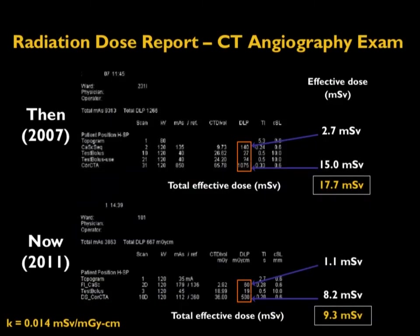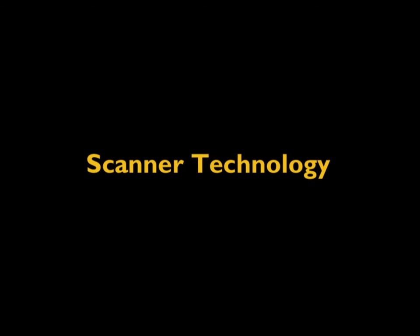This dose reduction is also demonstrated in patient dose reports from 2007 and 2011. In 2007, when retrospective ECG gating was commonly performed, radiation dose could be as high as 15 mSv. By 2011, with prospective triggering methodology, the dose came down to roughly one-half to one-third of that level. A number of advances have enhanced the ability to perform cardiac CT at much lower dose, including scanner technology.